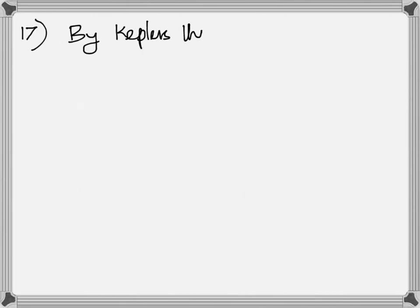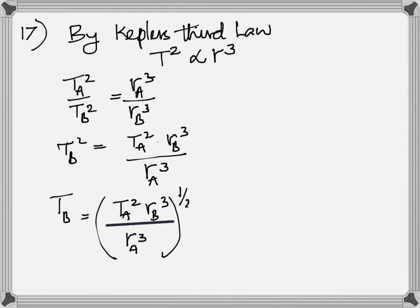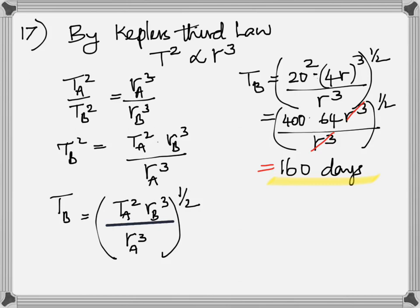Number 17. You use Kepler's third law. The square of the time period is in proportion to the cube of the semi-major axis. So TA squared by TB squared equals RA cubed by RB cubed. The moons are called moon A and moon B. You've got to find the time period for moon B. Make that the subject. Time period for A is 20 days. Taking cube root is raising it to 1 over 3. The answer, after you plug in all the numbers, is 160 days.